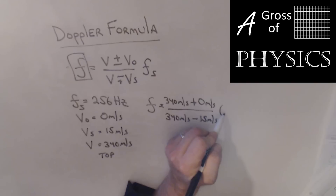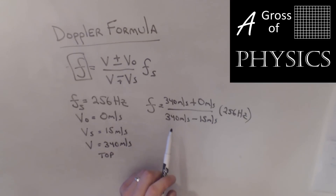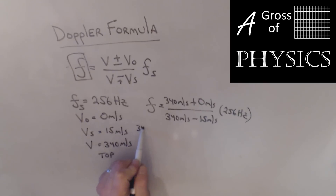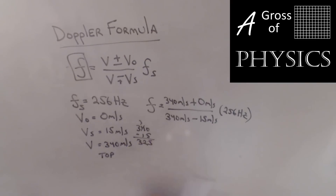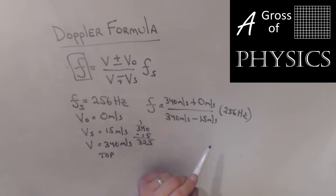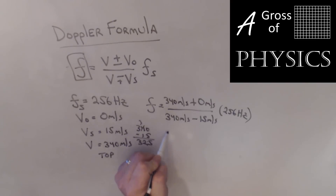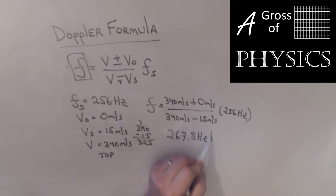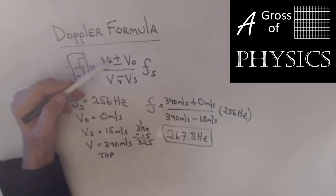Plugging in: F = (340 + 0) / (340 − 15) × 256 Hz. That gives 340 / 325 × 256 Hz. Since 340 over 325 is a ratio greater than one, the apparent frequency goes up. The result is 267.8 Hz. That's how we use the Doppler formula for two objects moving closer to each other — we use the top sign, and the apparent frequency increases.